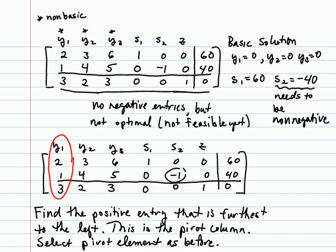Once we've found our pivot column, then we want to go back and choose the pivot element by the same type of ratios that we were doing before. So we'll look at 60 divided by 2, which is 30, and 40 divided by 1, which is 40. And so the smallest non-negative ratio there is the 30, therefore we're going to choose the 2 to pivot on.